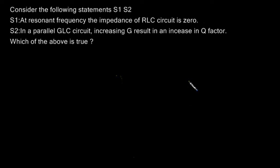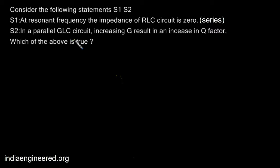This question was asked in electronics and communication. We are given two statements and asked to find out which is true. The first statement is: at resonant frequency, the impedance of a series RLC circuit is zero. We know that at resonant frequency the impedance of an RLC circuit is minimum, equal to the resistance R — but it is never zero. If you have a resistive element, the minimum impedance it can offer will be R ohms, so the first statement is wrong.